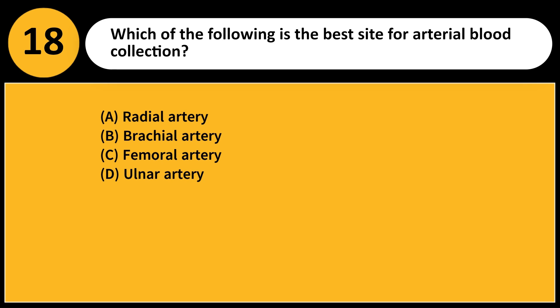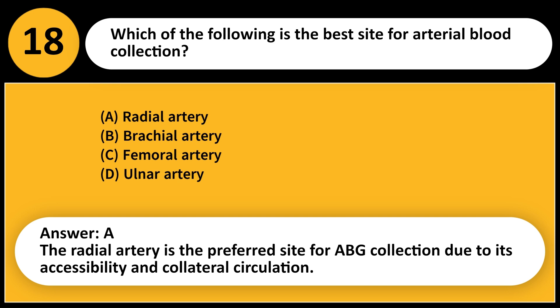Which of the following is the best site for arterial blood collection? A. Radial artery. B. Brachial artery. C. Femoral artery. D. Ulnar artery. Answer: A. The radial artery is the preferred site for ABG collection due to its accessibility and collateral circulation.